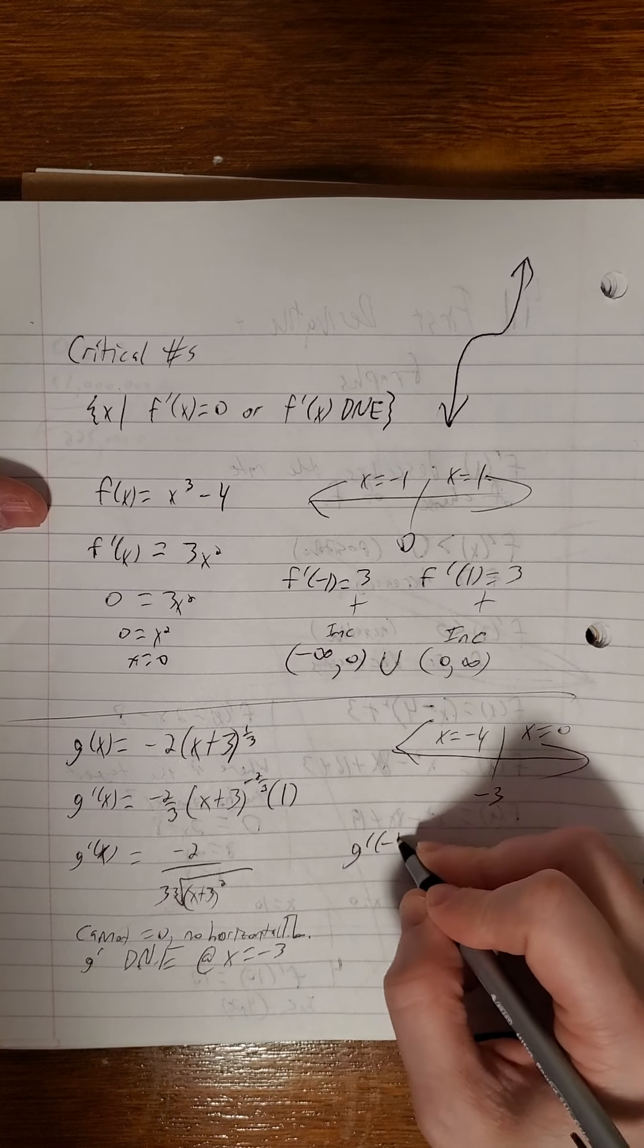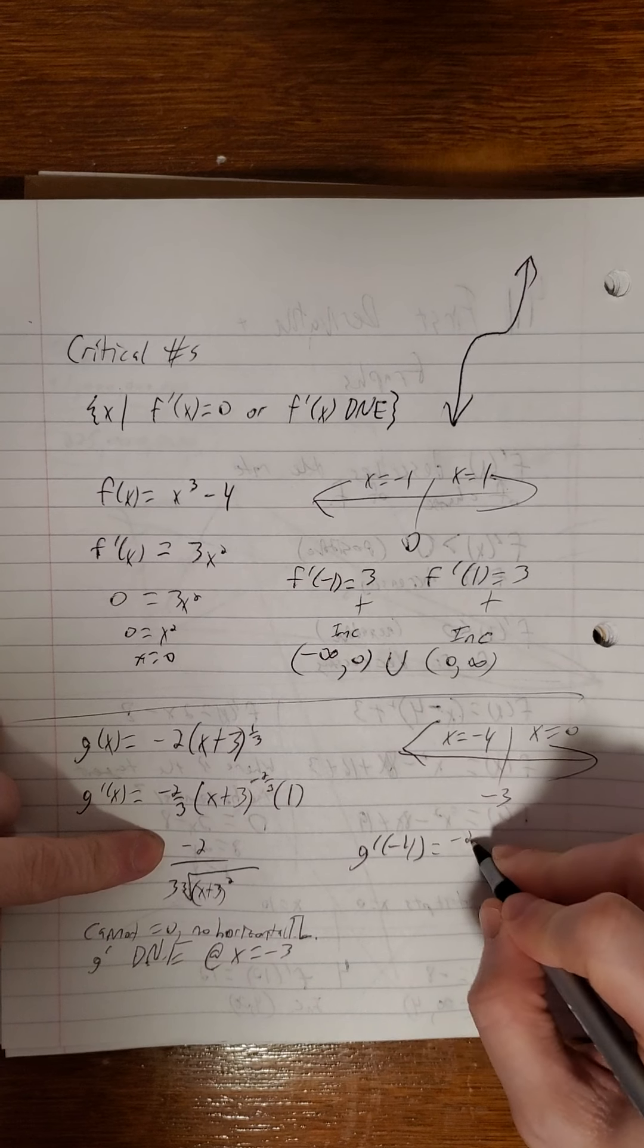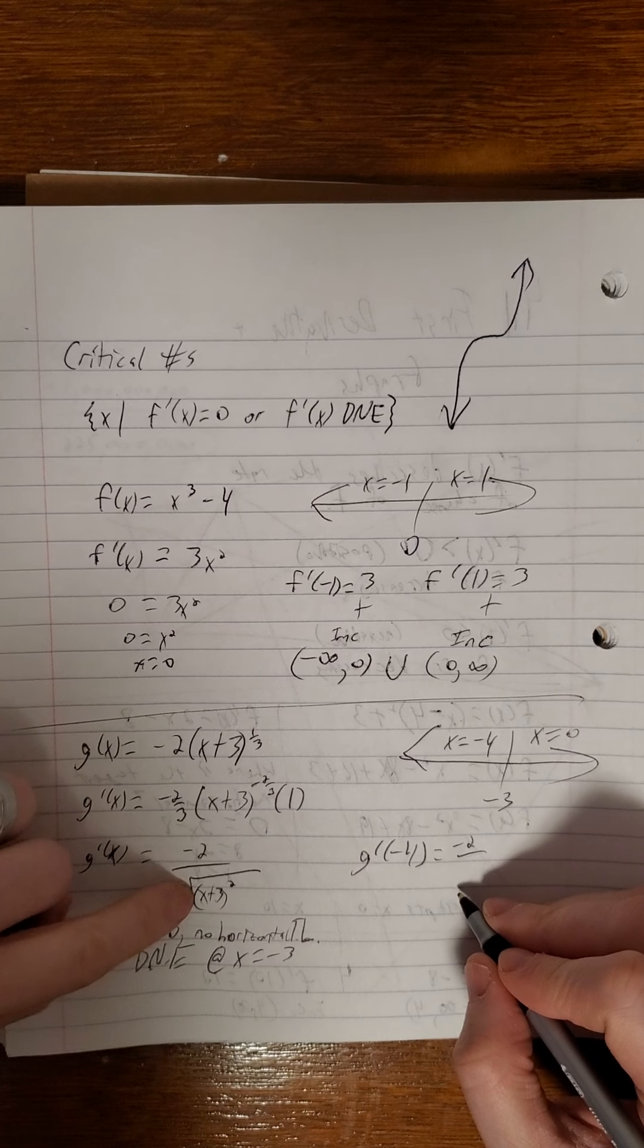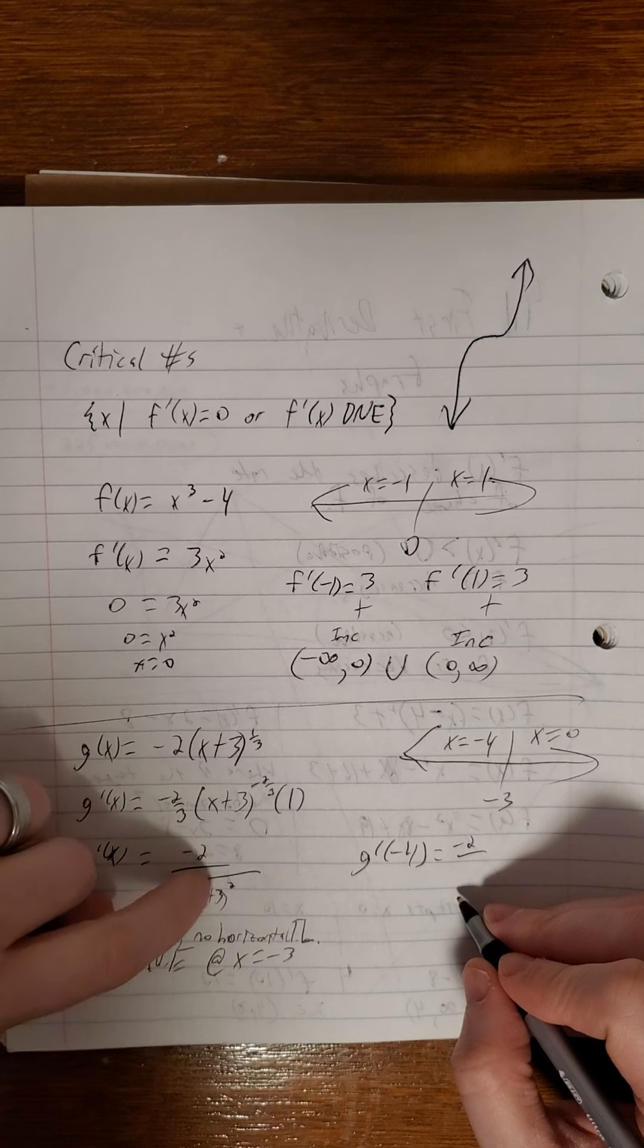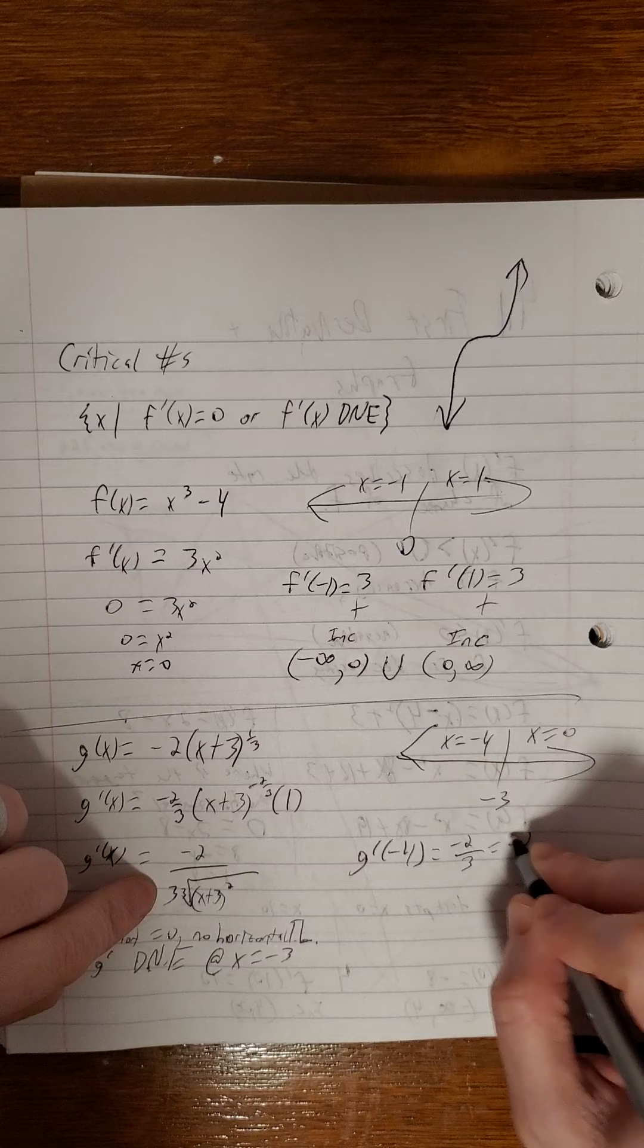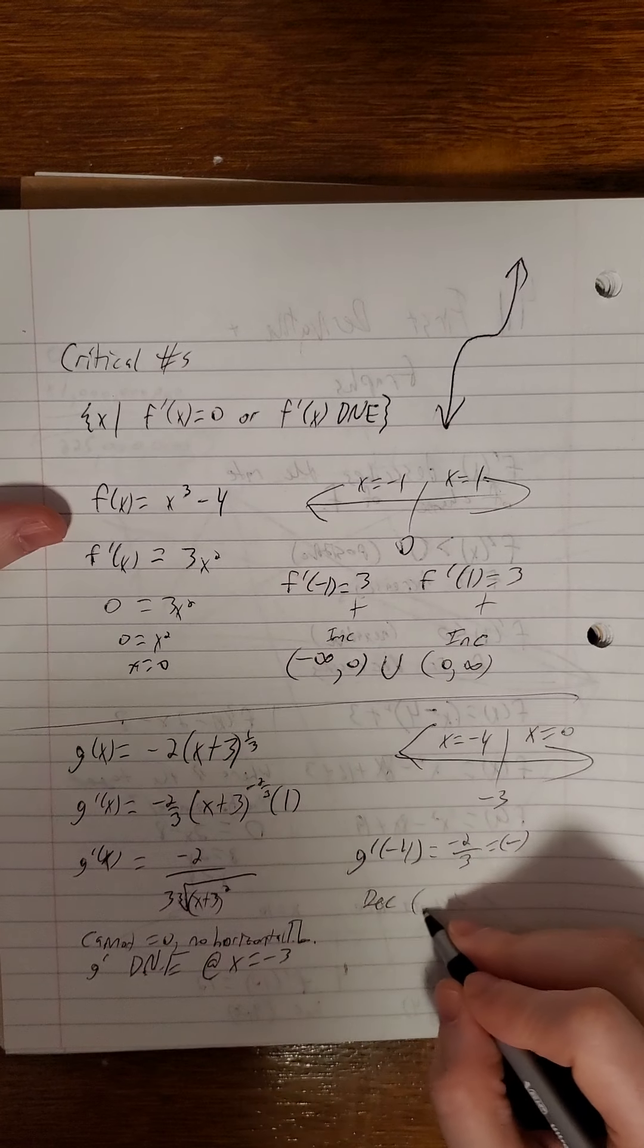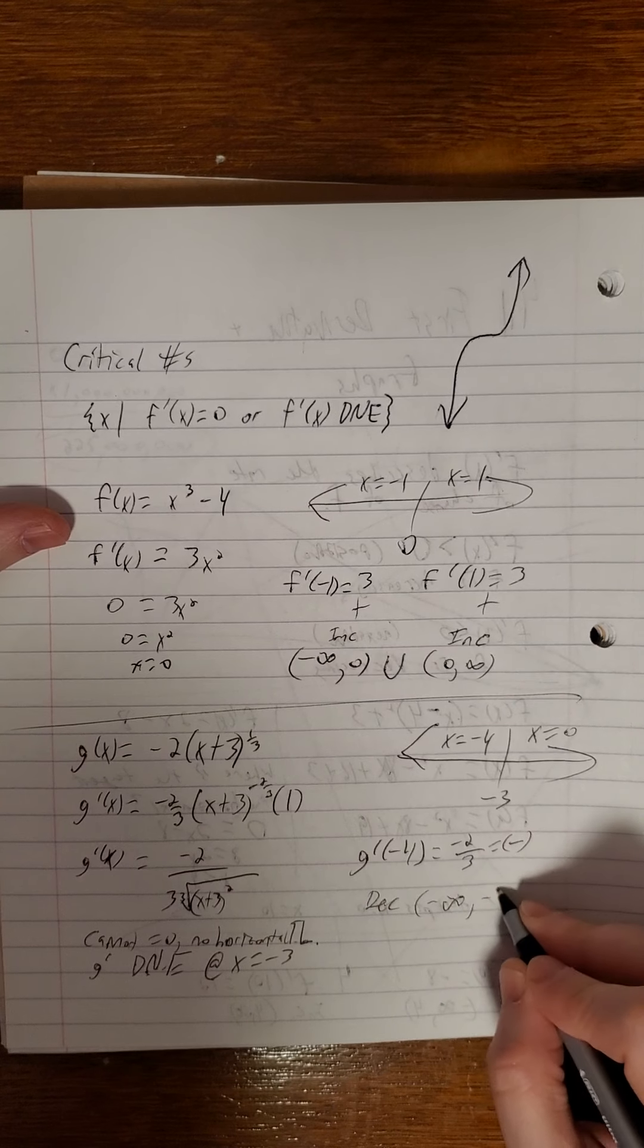So g prime of negative 4. So we have negative 2 upstairs. Negative 4 plus 3 is negative 1. Negative 1 squared is 1. Cube root of 1 is 1. 1 by 3 is 3. So this is a negative. So we are decreasing at least on negative infinity to negative 3.